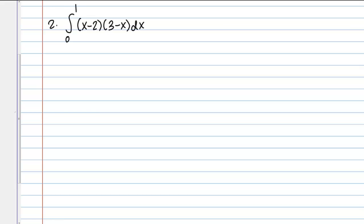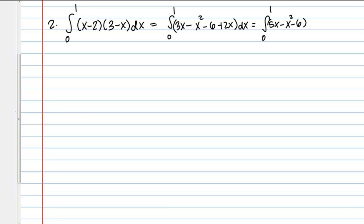Here we have the definite integral from 0 to 1 of (x minus 2) times (3 minus x). We know we need to take the antiderivative and then evaluate the bounds, but this expression doesn't fit any of our known antiderivative rules. We can remedy that by FOILing out the expression. If I FOIL this out, I get 3x minus x squared minus 6 plus 2x, which combines to 5x minus x squared minus 6 dx.